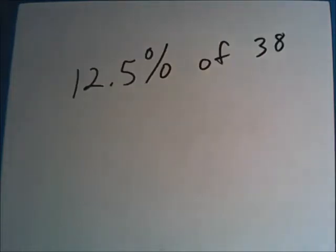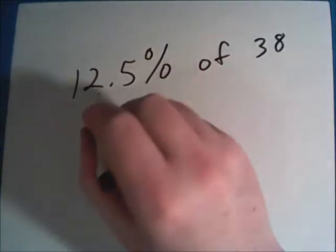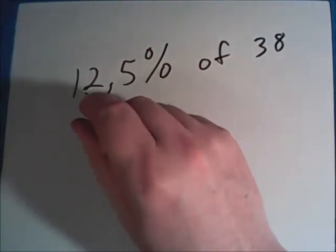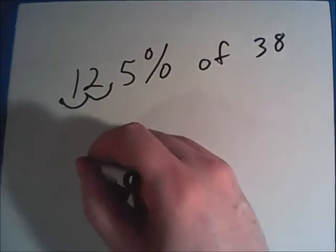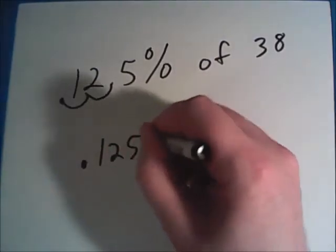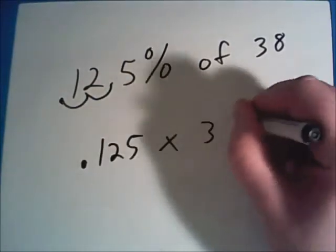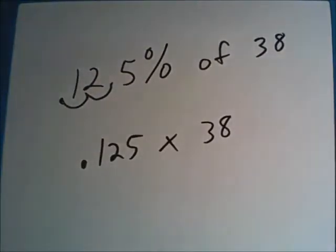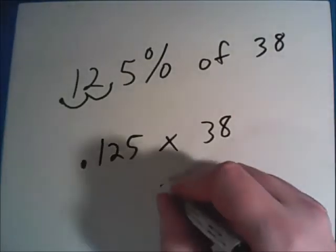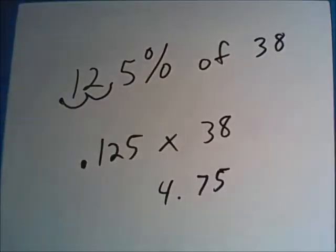In this one, we're given 12.5%, and we're asked to find it of 38. So here we're still going to have to move that decimal point, but we already have one in this problem. So we'll just move it two places to the left to make the decimal .125. And just like last time, we're going to multiply it times our 38 here. So .125 times 38 should get us 4.75. So 4.75 is 12.5% of 38.